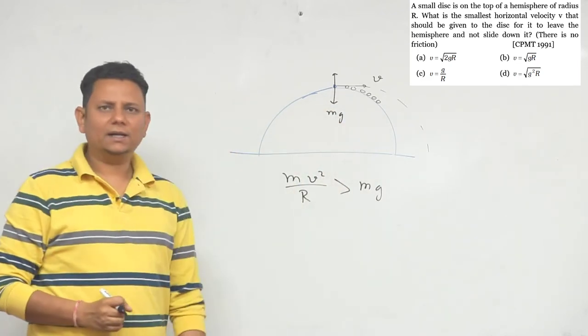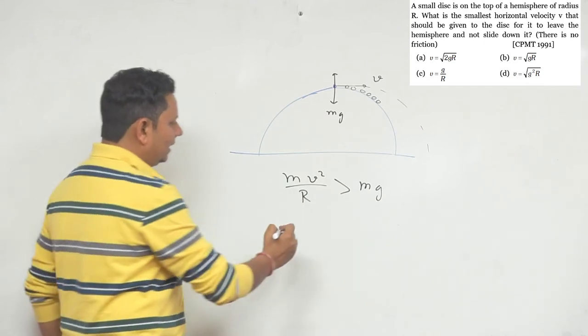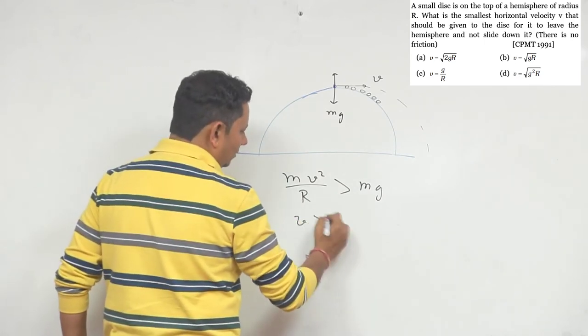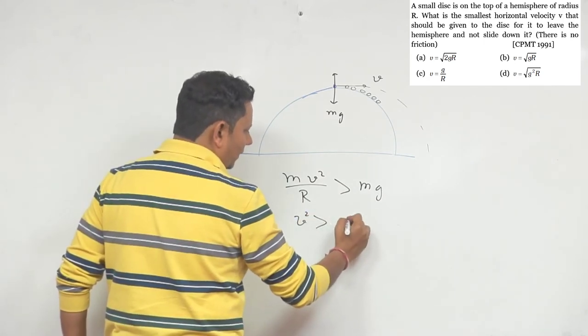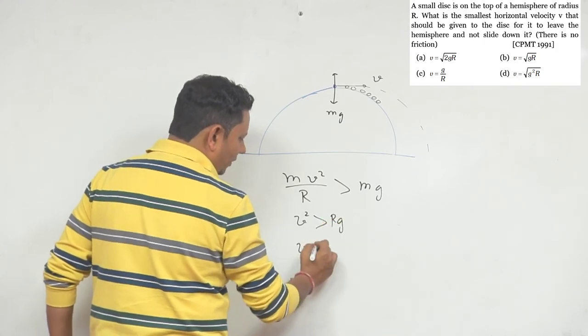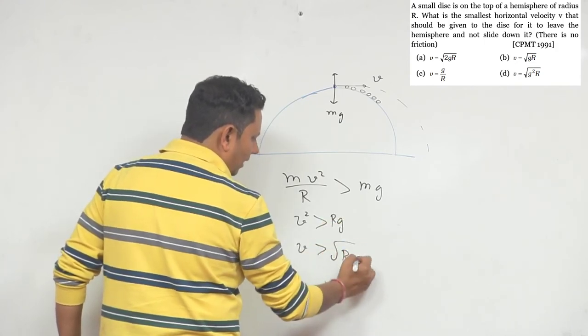So from here, m will get canceled. That means v² should be greater than rg, or v should be greater than √(rg). So this will be our right answer,